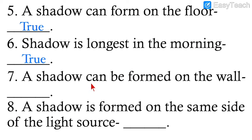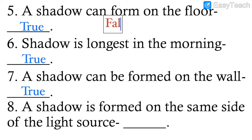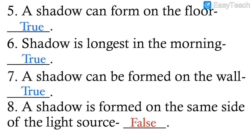Number seven: A shadow can be formed on the wall — yes, true. A shadow can form on the wall or on the ground. Number eight: A shadow is formed on the same side of the light source — this is false. A shadow is always formed on the opposite side of the source of light, not on the same side.